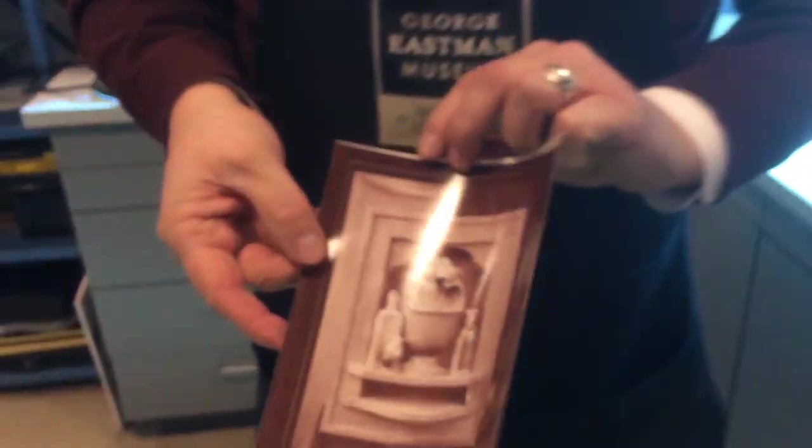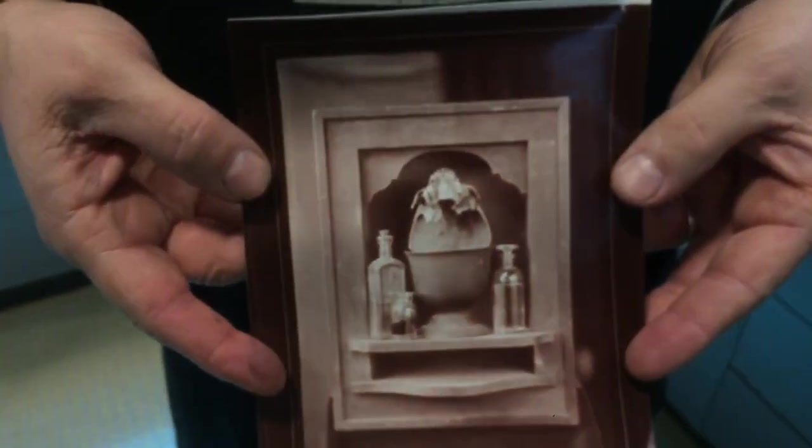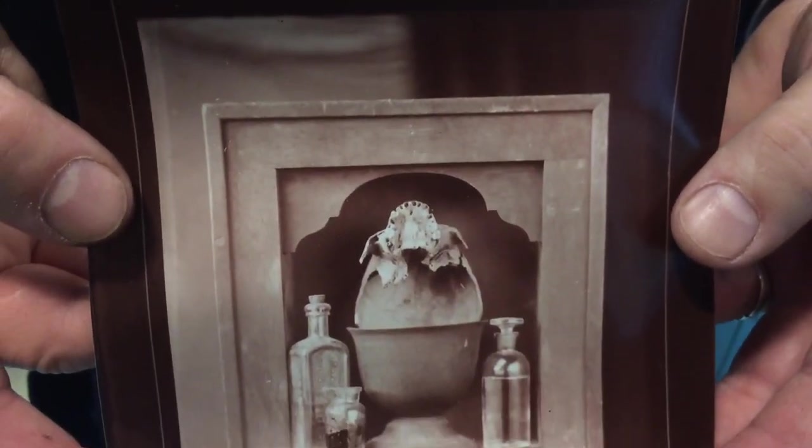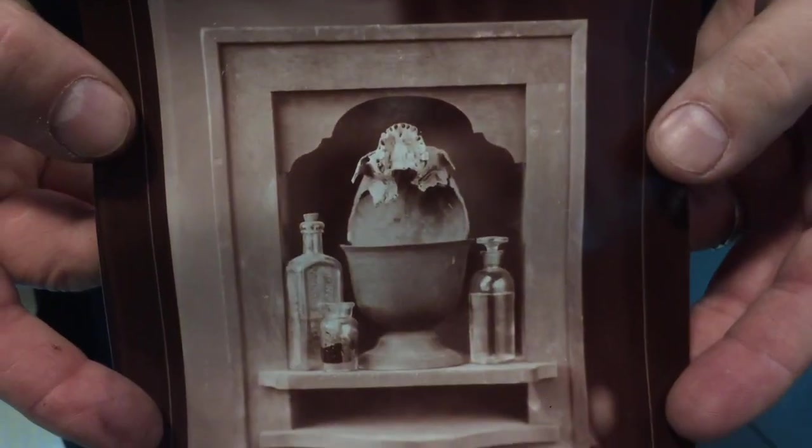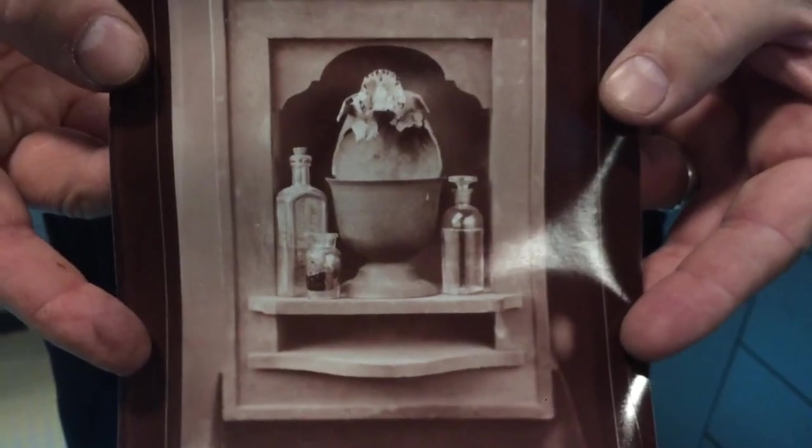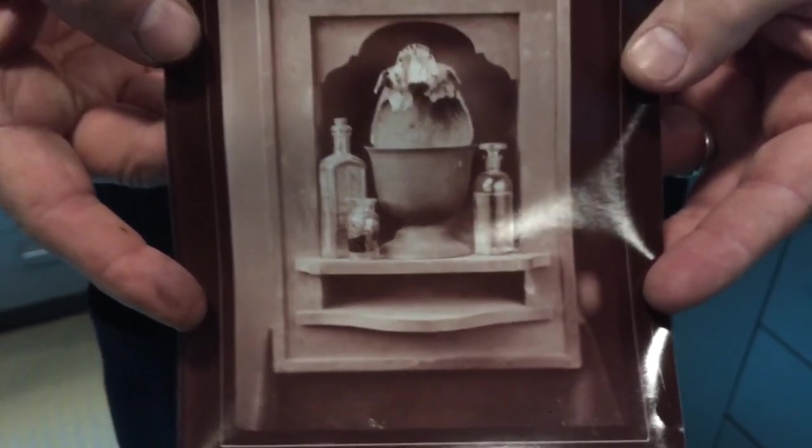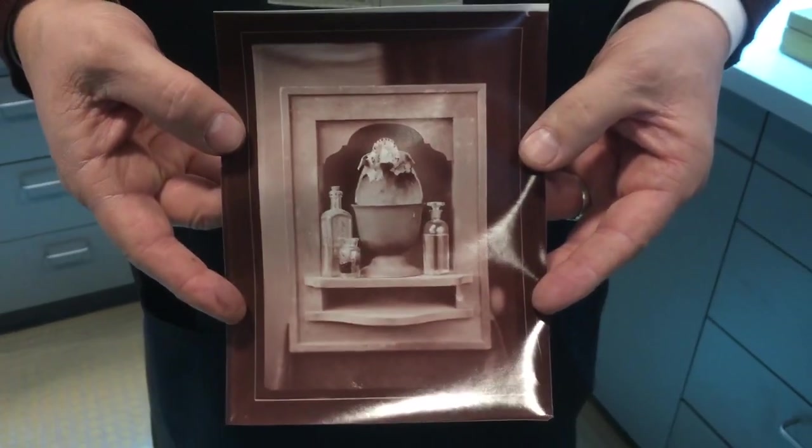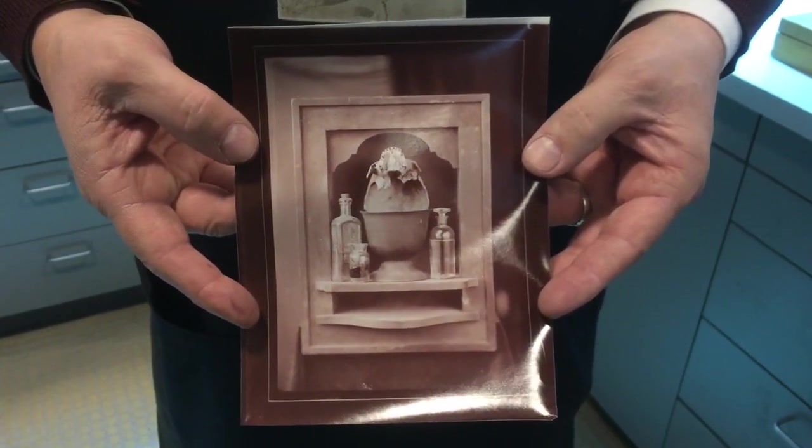We won't print this to completion, but at least you can see how it makes an image. We'd want to print this maybe twice as long because it's going to lose some density during the chemical processing. That includes washing, toning with gold chloride, fixing, and then giving a final wash.